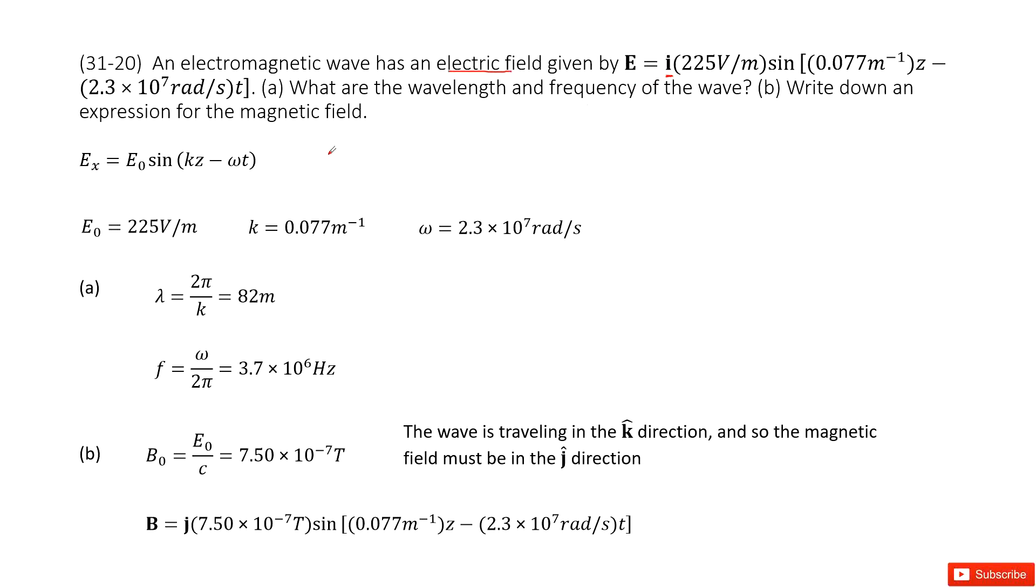And we can write the function, the general function for x direction as E naught sine kz minus omega t. And in this general equation, you can very easily compare these two and get E naught equal to the amplitude there.